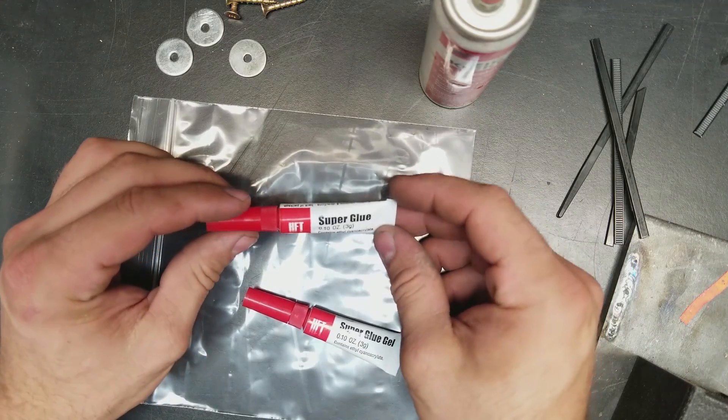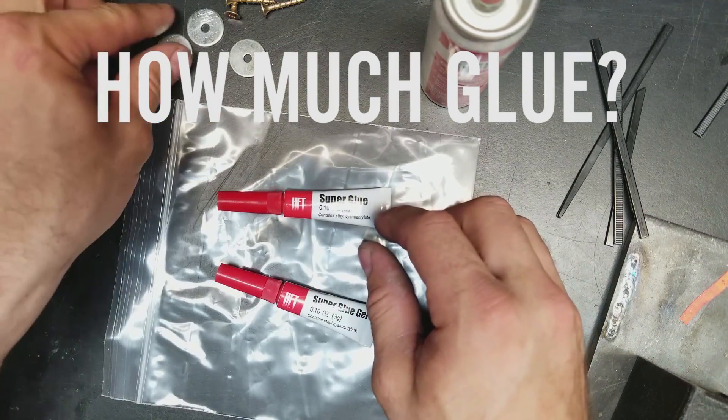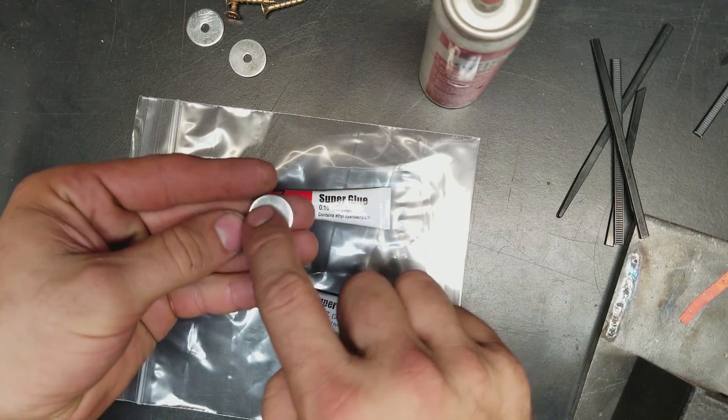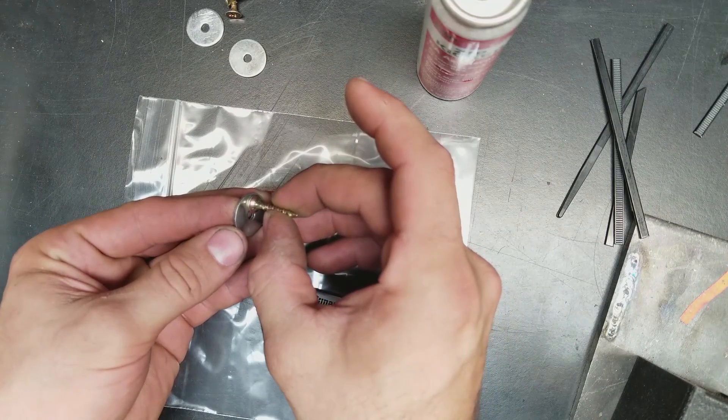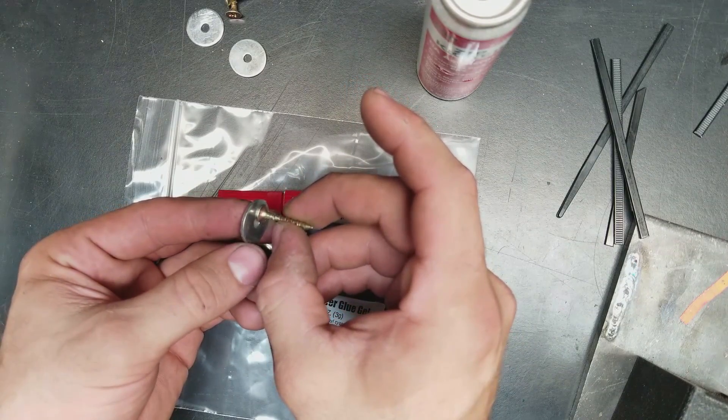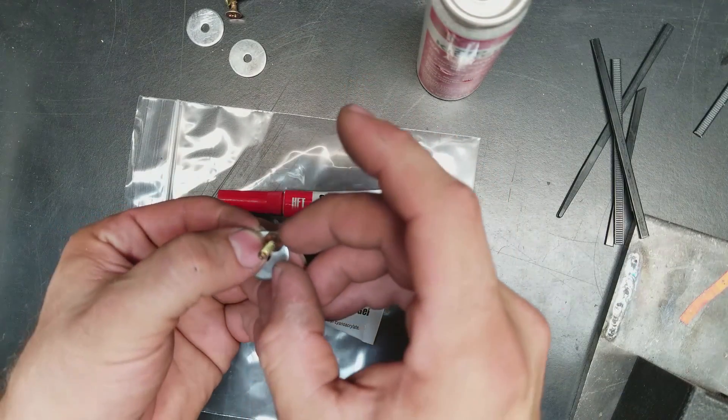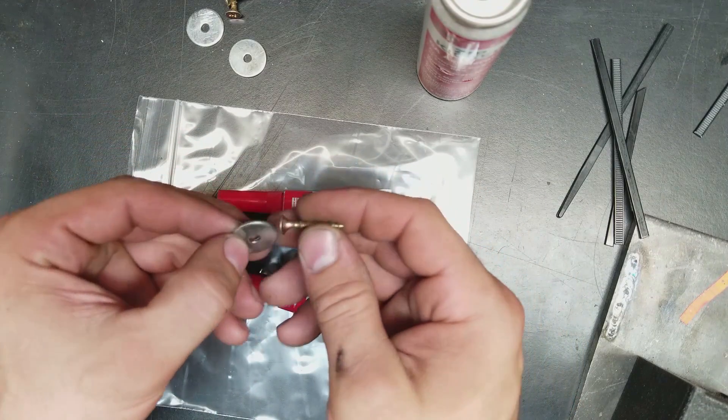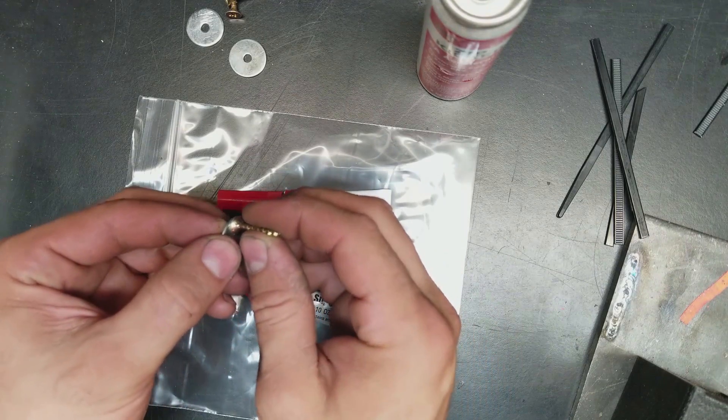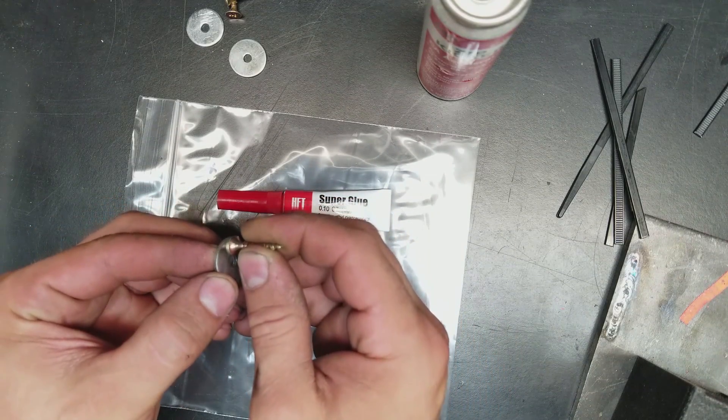Super glue itself is usually pretty watery and it's designed to flow between two surfaces via capillary action. So if I put a dot here and I press these two things together in my completely contrived example, I don't want a bunch of it pooling out. I don't want any excess. I just want these two things to stick together with exactly enough to fill this internal area, and inside that area the glue will cure perfectly.